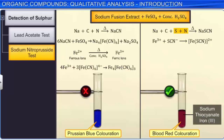To detect the presence of phosphorus, the sodium extract is heated with the oxidizing agent sodium peroxide and then treated with ammonium molybdate. If a yellow precipitate of ammonium phosphomolybdate is formed, it indicates the presence of phosphorus.